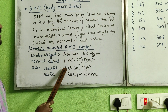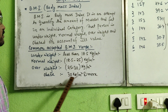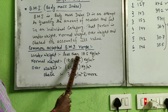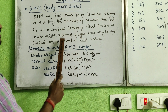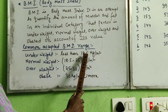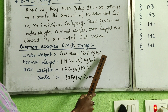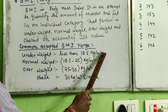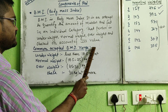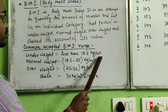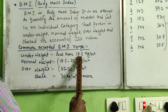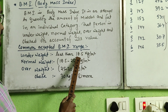Now let's see the ranges of BMI. The unit of BMI is always kg per meter square — weight in kilograms divided by height in meters squared. If a person's calculated BMI is less than 18.5 kg/m², that person is classified as underweight.